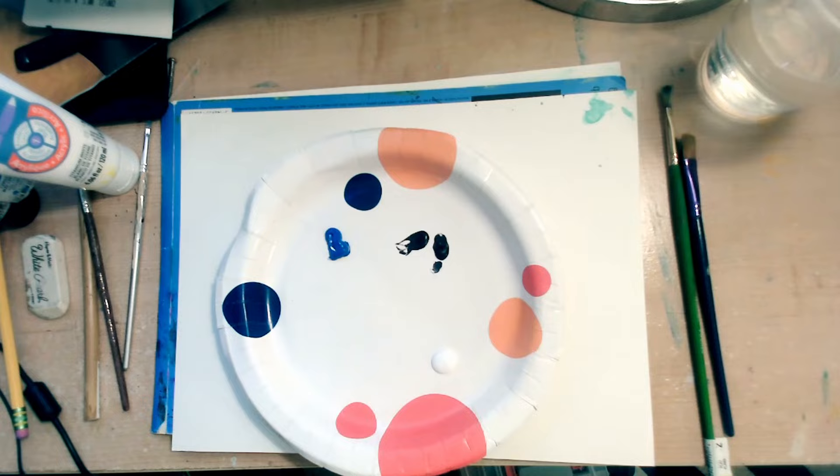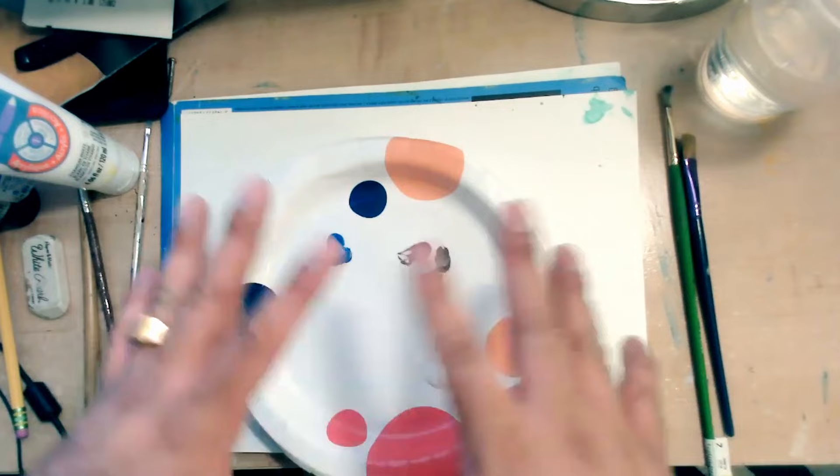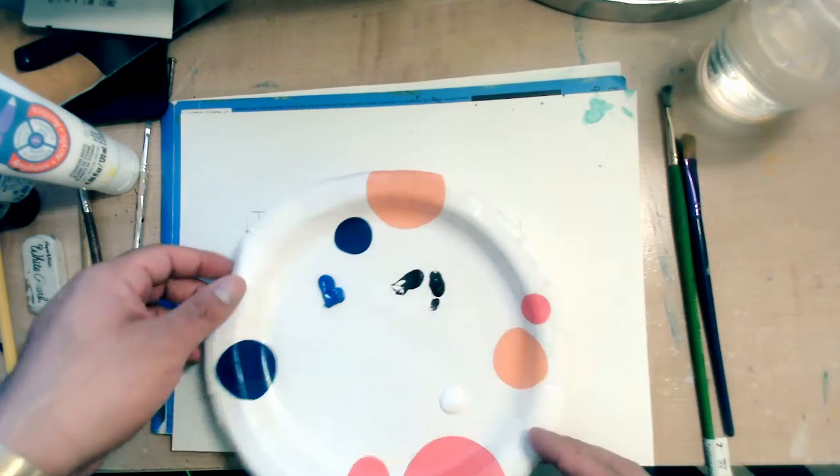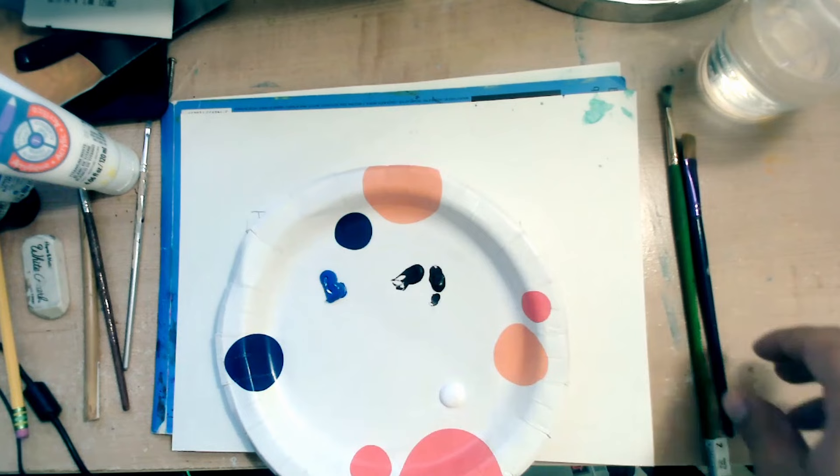So a regular color wheel has twelve sections, has the primary colors, the secondary, and the tertiary. So pick one of those colors. I chose blue because I like working with blue. And that is going to be my hue.